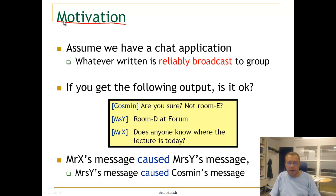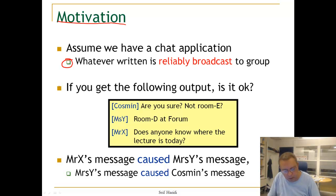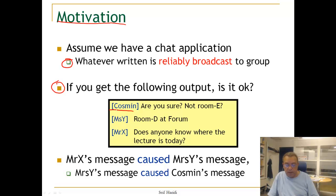Assume that we have a chat application, and in this chat application, whatever is written is reliably broadcast to a group. Assume that you are one of these group members and you got the following output. From a person called Cosman, you got: 'Are you sure not in room E?' And after that, you get the message from Ms. Y: 'Room D at forum.'